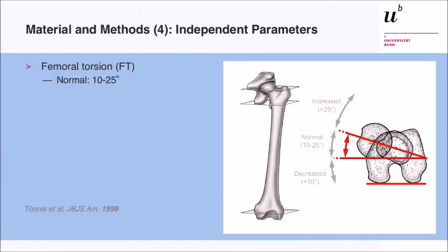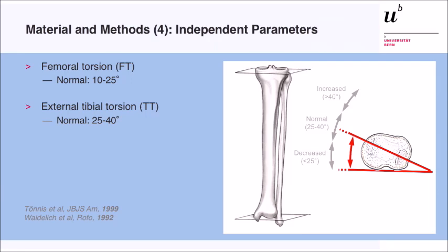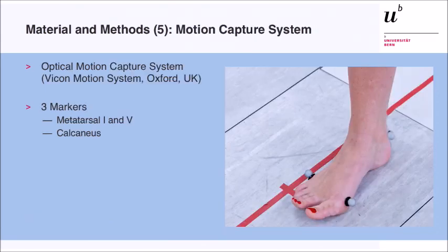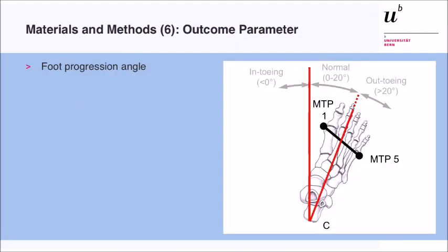These were the parameters we measured. First, femoral torsion using the Murphy method: normal 10 to 25 degrees, increased more than 25 degrees, decreased less than 10 degrees. We also assessed external tibial torsion, which is considered normal between 25 and 40 degrees. All patients went to a gait lab as part of routine workup. We used three markers fixed to metatarsals 1 and 5 and the calcaneus, which allowed us to quantify the foot progression angle — reported to be normal between 0 and 20 degrees. In-toeing is less than 0 degrees; out-toeing gait is more than 20 degrees.